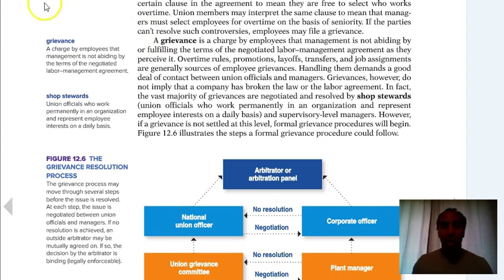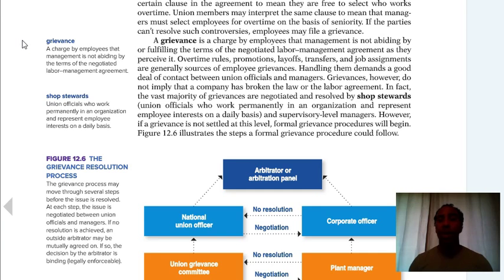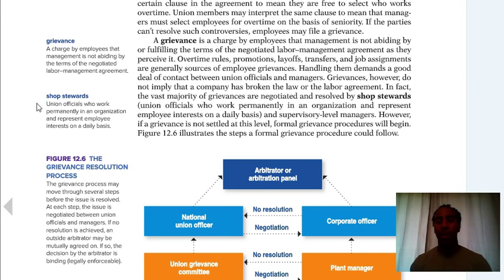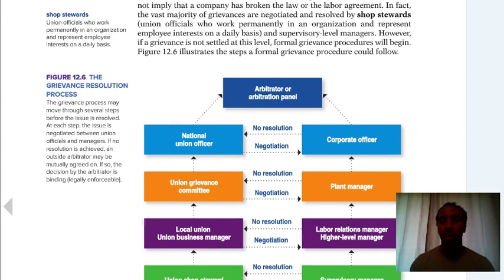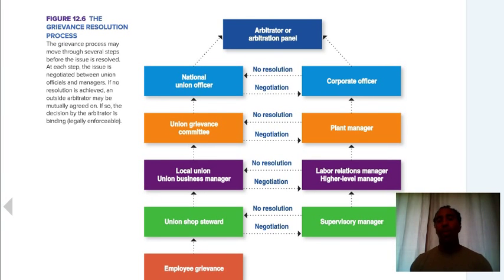A grievance is a charge by employees that management is not abiding by the terms of the negotiated labor-management agreement. Employees are saying, 'We agreed to this, but you guys aren't abiding by it, so now I'm going to file a grievance.' You go to your shop steward — a union official who works permanently in the organization and represents employee interests on a daily basis. The steward helps you organize and get things pushed through appropriately.